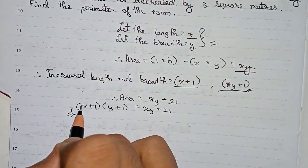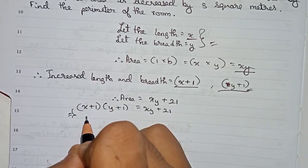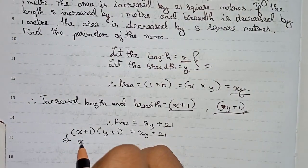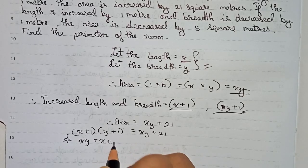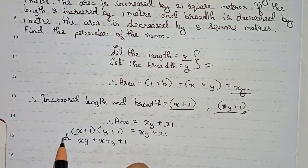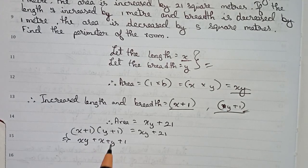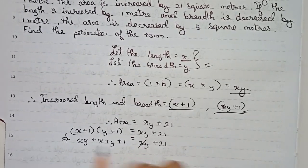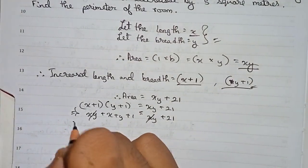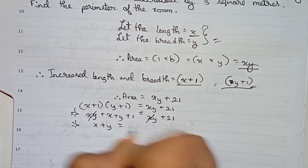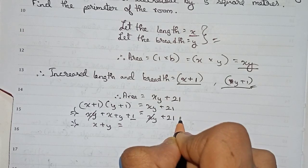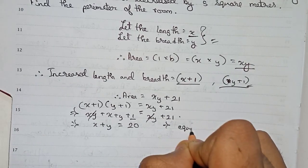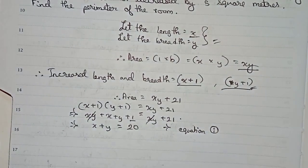Now we multiply out (x+1)(y+1), which gives xy + x + y + 1 = xy + 21. The xy terms cancel out, and taking 1 to the right side gives x + y = 21 - 1, so x + y = 20. This is equation number 1.